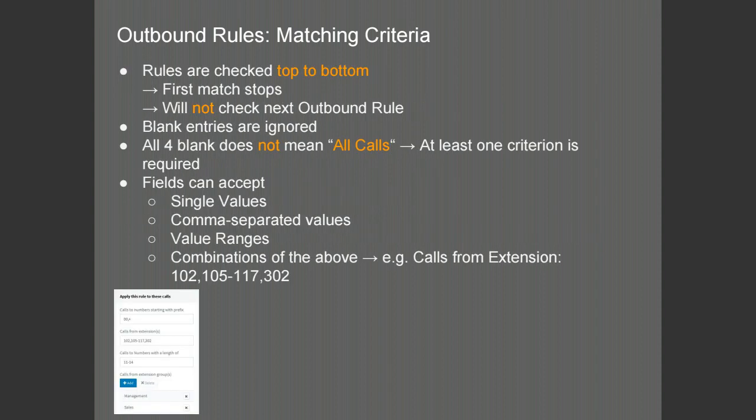The outbound rules of 3CX are checked in a top-down fashion, always starting at the top and working its way down. When a match is made, it will stop processing rules and will not check the next rule or any subsequent rules. If there are no criteria in the outbound rule, this rule will be ignored and the PBX will proceed onto the next available rule.